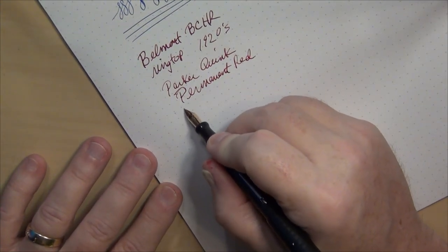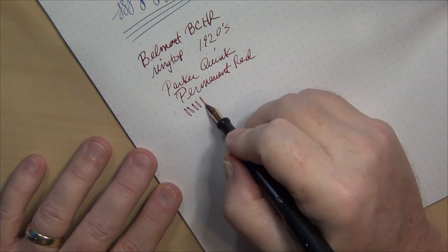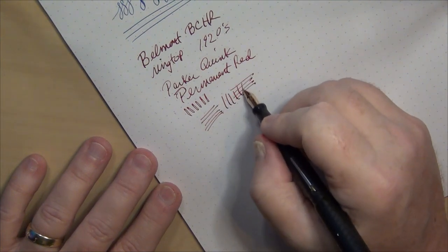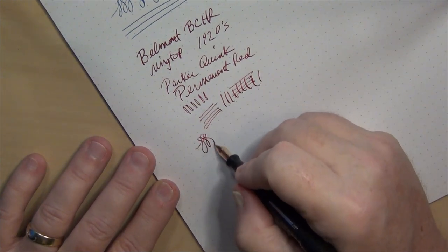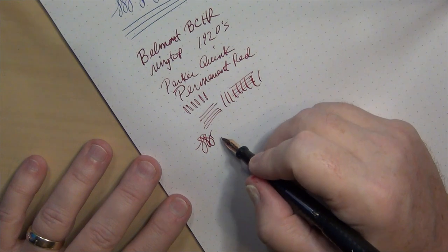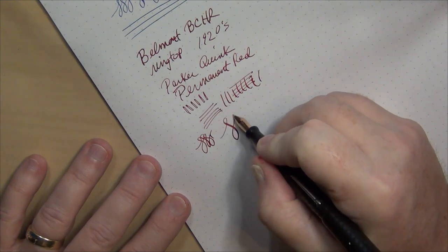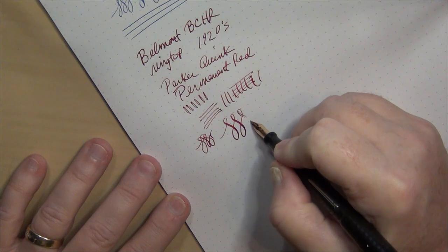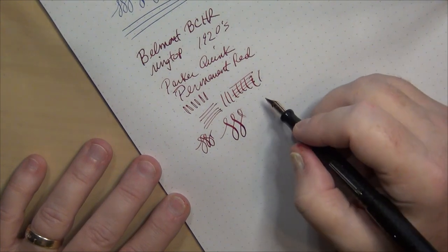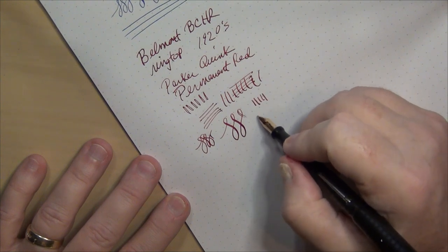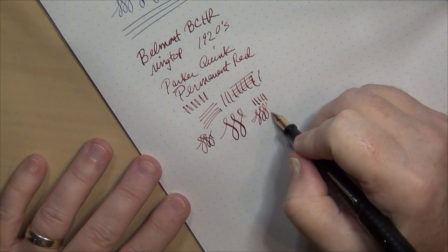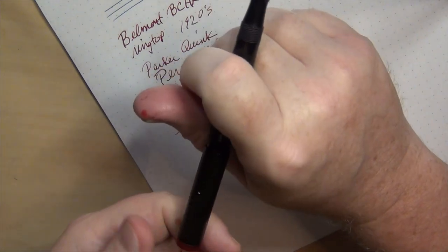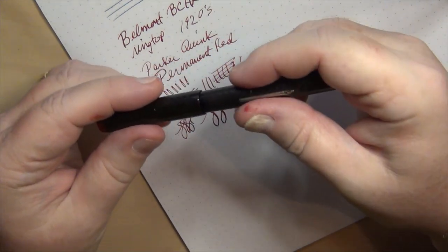So also a 1920s in my estimation and I use some of the Parker Quink and this was the permanent red. Does not do well when you railroad really easily when you try to do that. But I will say it is a lot smoother than it was. If you go slow you can get some line variation until you railroad, so then you get it writing again. You're seeing it as I'm seeing it pretty much for the first time.